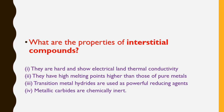Interstitial compounds — for example AgCl, AgBr, zirconium hydrate, and titanium carbide — are called interstitial compounds because the cation, which is the d-block element, is very much smaller than the anion. In a crystal lattice, the cation occupies the gap rather than a fixed lattice point, which is why these are called interstitial compounds.